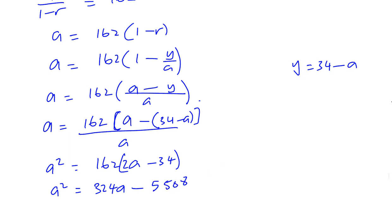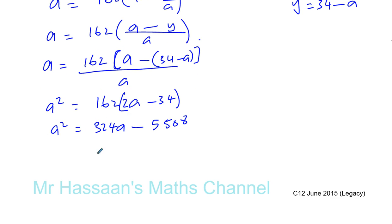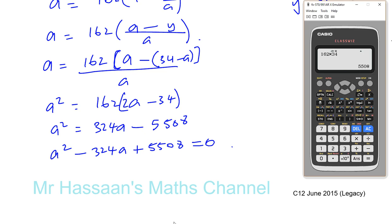So we see we've got a quadratic here. We can bring everything to one side: minus 324A and plus 5,508 equals 0. Now we can use the formula, we can factorize, but factorizing here is going to be difficult. But really what you could actually do here is you could use this function in a calculator.